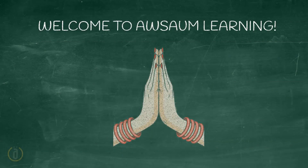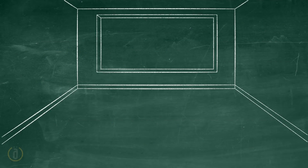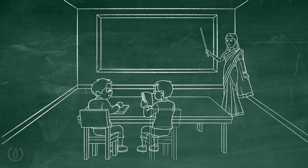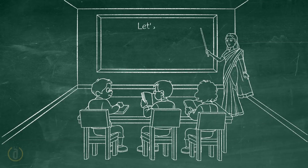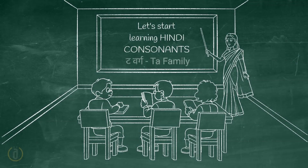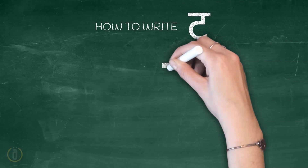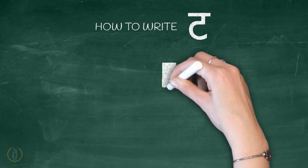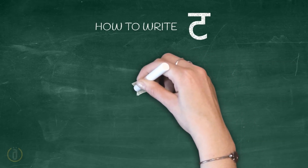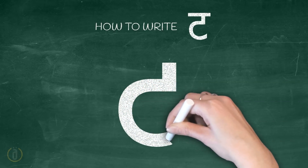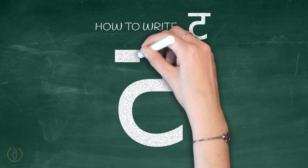Welcome to Awesome Learning. Let us start learning Hindi consonants. The first letter: how to write it — draw a small standing line, connected to that draw a semicircle, and finish it with a sleeping line.